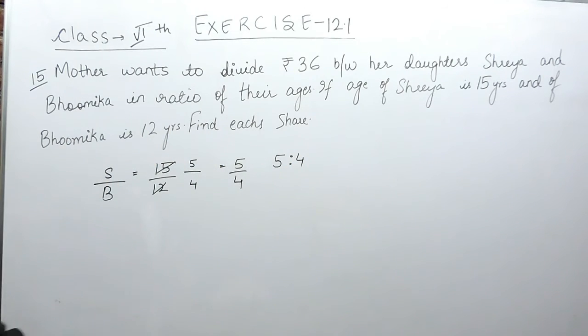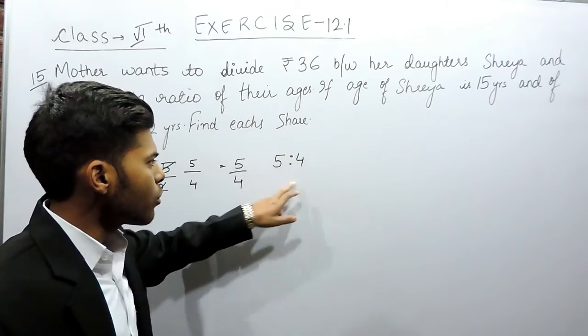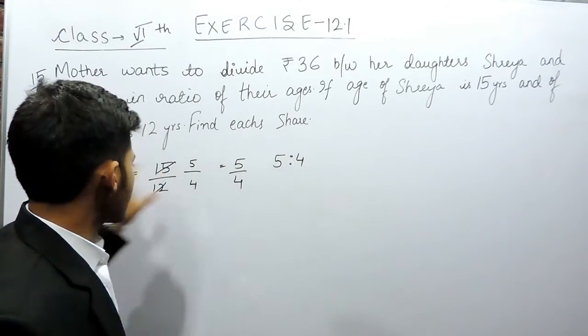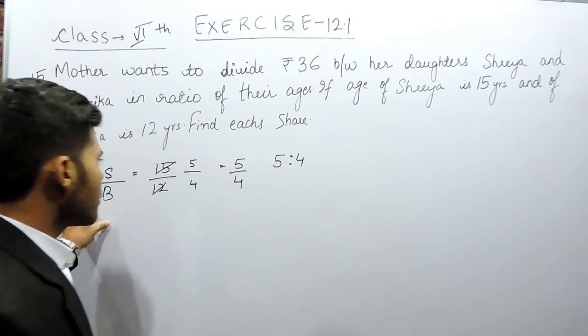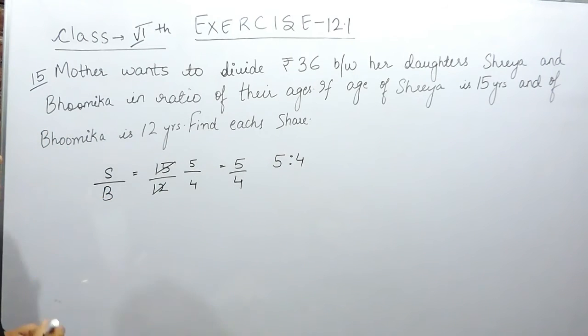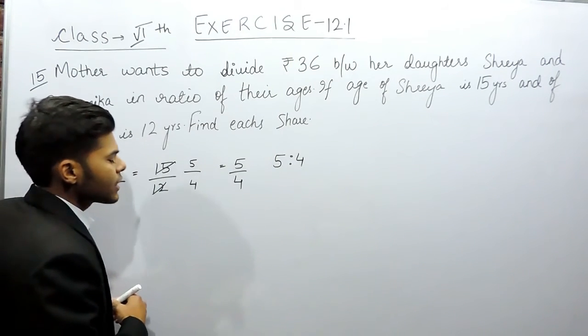This means that if she were having a total of 9 rupees, she would give 5 rupees to Shreya and 4 rupees to Bhumika. But now she has a total of 36 rupees.